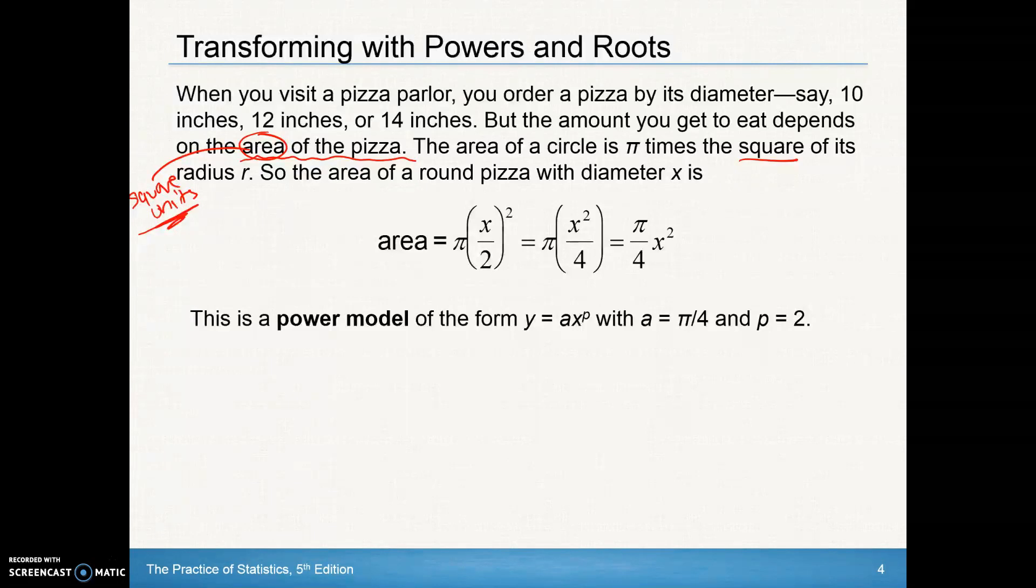So again, we can look at the area formula, pi times our diameter divided by two squared. If you do a little simple math here, if we bring that square to each piece here, we get this right here, x squared over four, and then it's kind of rewriting the formula. This is really kind of our formula here where this is my a value, there is my x, and there is my power. So this is a power model. Again, with that a value there, the p value being right here.